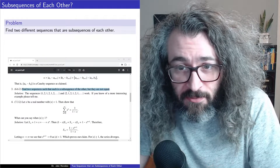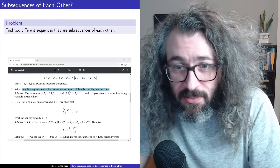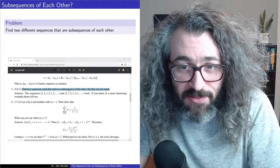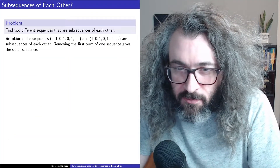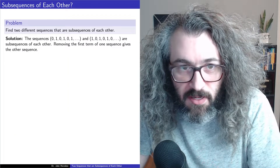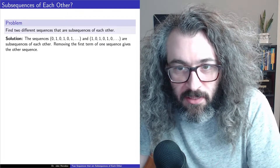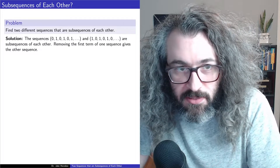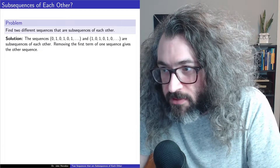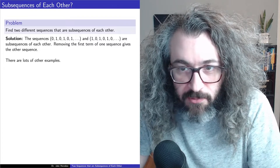So I thought about this some more, and I came up with an example that I think is more interesting. I prefer zeros and ones, so I'm just repeating what the other solution was. You can take the sequence 0, 1, 0, 1, 0, 1 and the sequence 1, 0, 1, 0, 1, 0. These sequences are subsequences of each other, but there's lots of other examples.